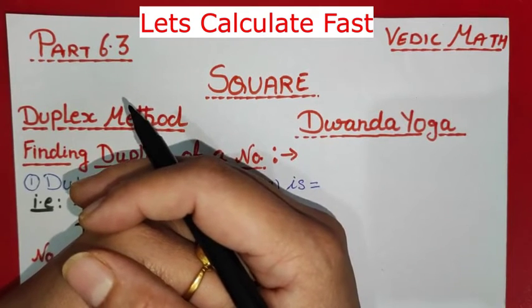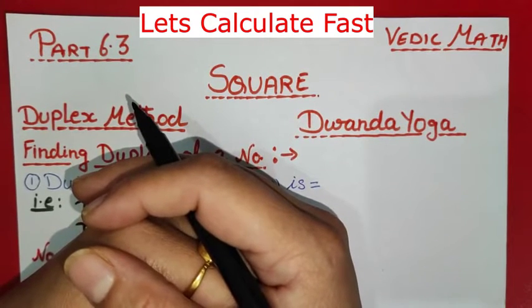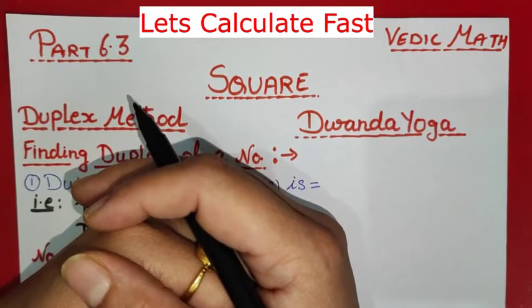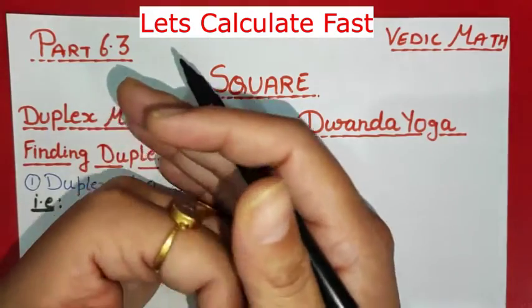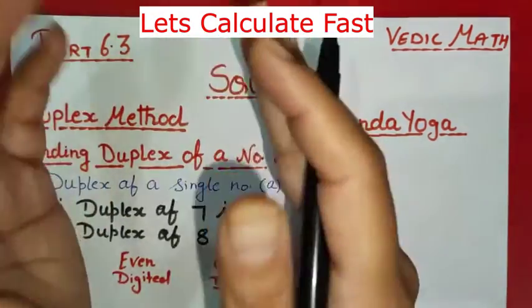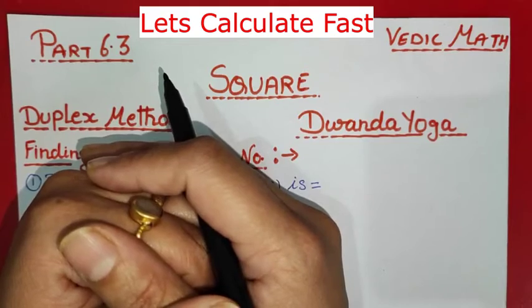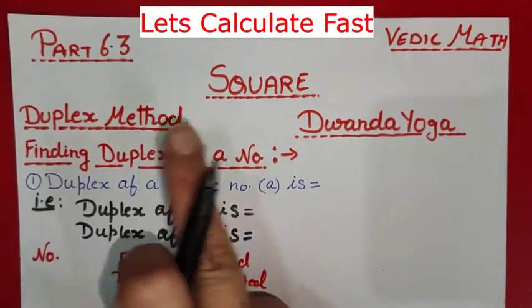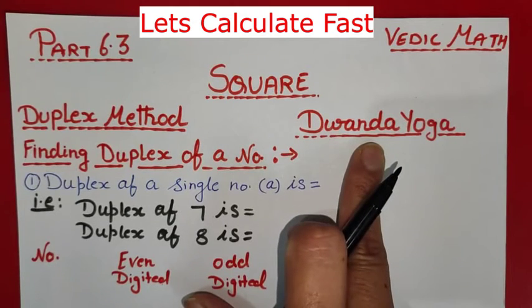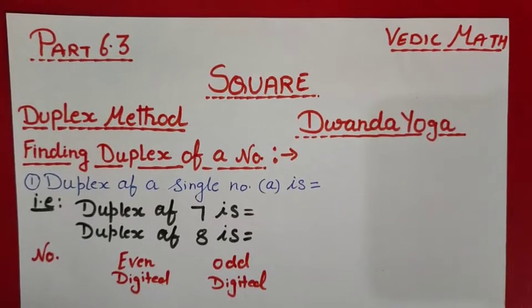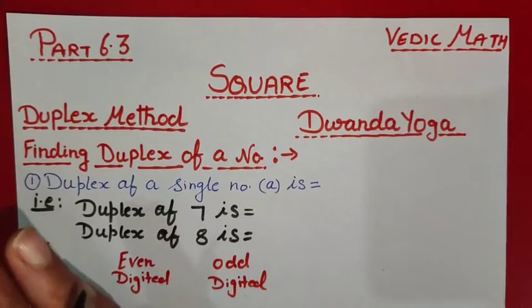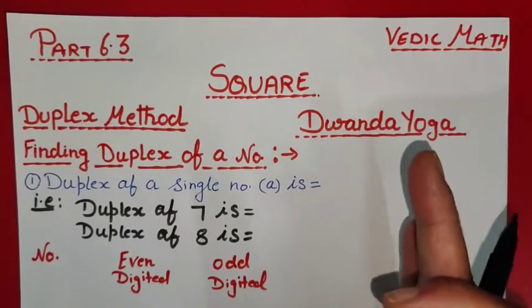Welcome to 'Let's Calculate Fast.' In part 6.2 we learned to find the square of some particular types of numbers, but from this part we will learn a universal method of finding the square of any number of any length. We are going to learn the duplex method of squaring, and its Sanskrit sutra is 'Anurupyena.' In this part we will learn to find the duplexes of numbers, and in the next part we will use these duplexes to find the square of any number. Let's start with understanding what the duplex of a number is.